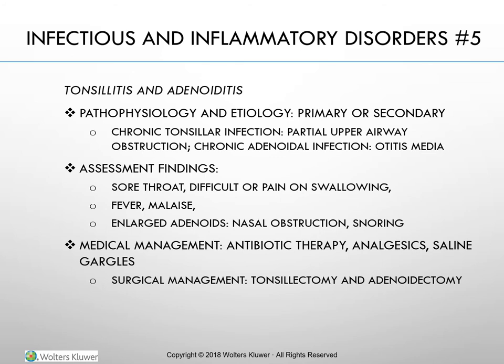Tonsillitis is the inflammation of the tonsils, and adenoiditis is inflammation of the adenoids. These conditions generally occur together, and the common diagnosis is tonsillitis. Although both disorders are more common in children, they may also be seen in adults. Tonsils and adenoids are lymphatic tissues and common sites of infection. Primary infection may occur in the tonsils or adenoids, or the infection can be secondary to other upper respiratory infections. Chronic tonsillar infection leads to enlargement and partial upper airway obstruction. Chronic adenoidal infection can result in acute or chronic infection in the middle ear (otitis media). If the causative organism is group A streptococcus, prompt treatment is needed to prevent potential cardiac and renal complications.